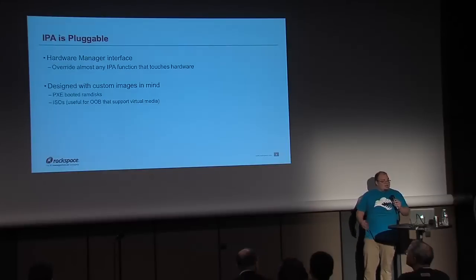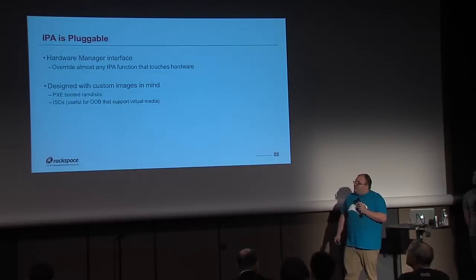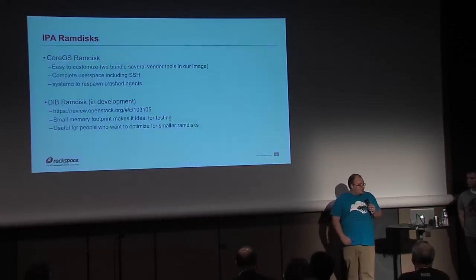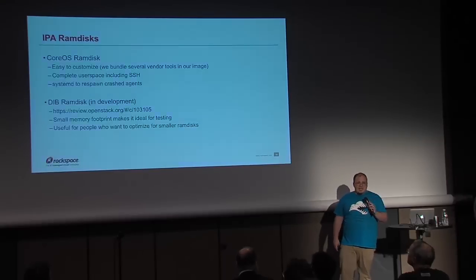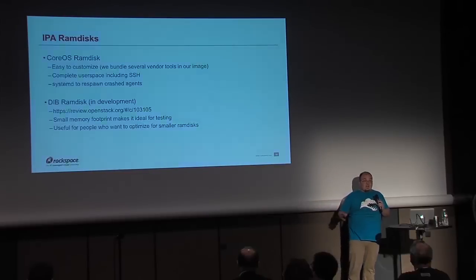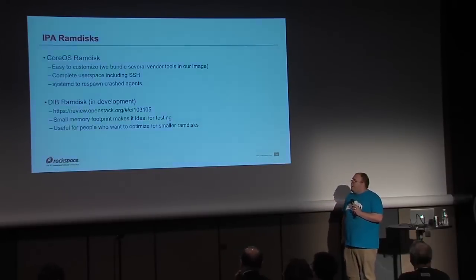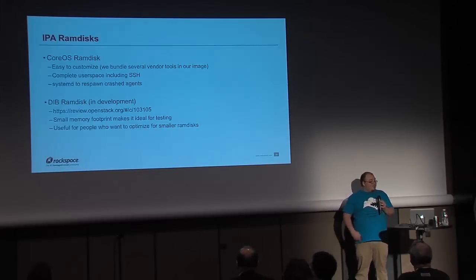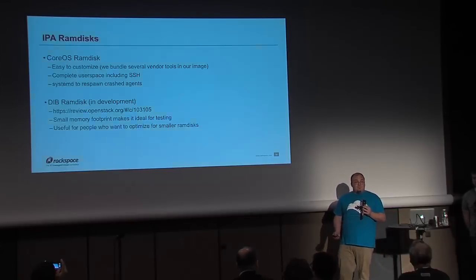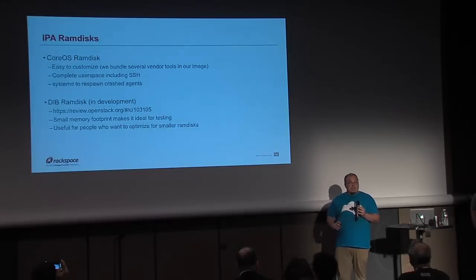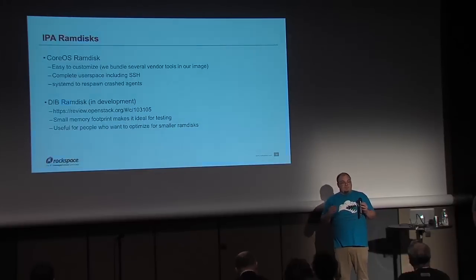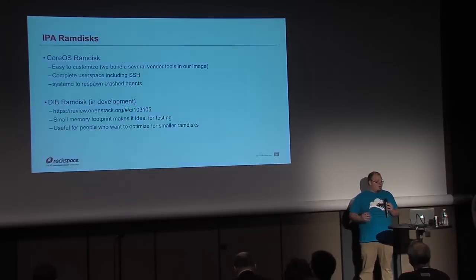IPA was designed with custom RAM disk images in mind. Today we have one PXE-bootable RAM disk and an ISO, and we have another coming. The existing RAM disk runs under CoreOS, which is very easy to customize — it has a lot of tools for OEM-ing things into your own images. It has a complete user space: we can SSH in, diagnose hardware problems, troubleshoot deployments. It also has a real init system — systemd — which will respawn any agent should it crash, so we don't have nodes left in a weird state.